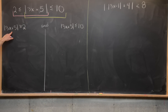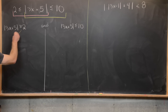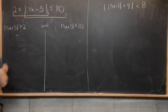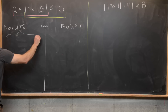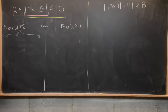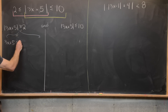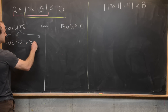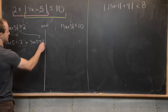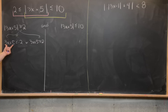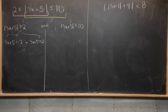If the absolute value of 3x plus 5 is bigger than or equal to 2, that itself splits into two cases. Those two cases are: 3x plus 5 is less than or equal to negative 2, or 3x plus 5 is bigger than or equal to 2. Notice if 3x plus 5 is less than or equal to negative 2 — like negative 3 — you take the absolute value and you've got something bigger than 2. That's why that works out.